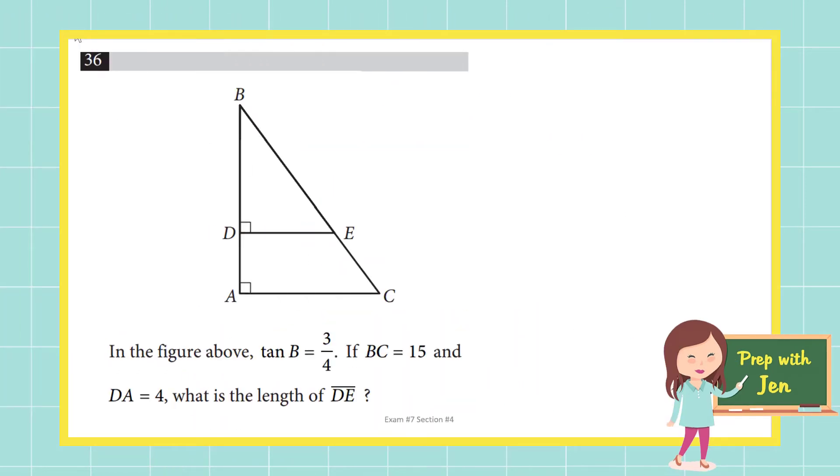Let's try another question. This one is number 36 from practice exam number 7 in the calculator section, section 4. In the figure above tangent of B is 3/4. I want to make a very important note here that when we give you tangent of an angle you have no idea what the side measures are. Tangent of B equals 3/4 does not mean the short leg measures 3 and the long leg measures 4. Why? Because tangent is a ratio. The side lengths could just as easily be 6 and 8 or 9 and 12 and those still reduce down to 3/4. So you want to be very careful here.